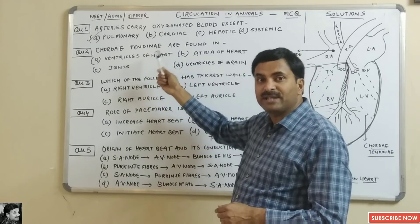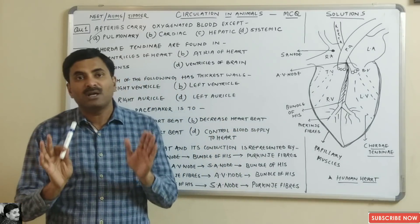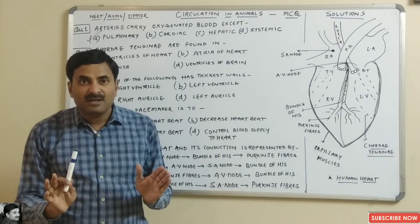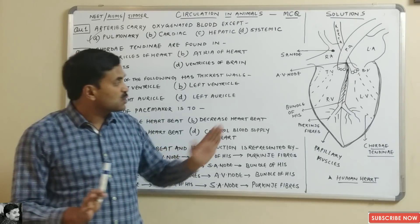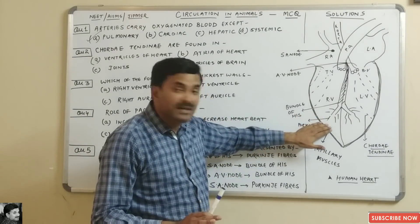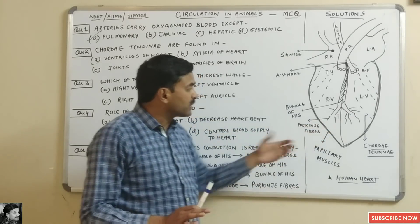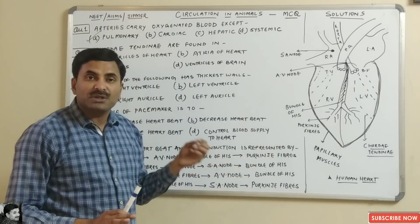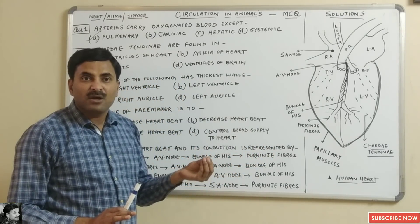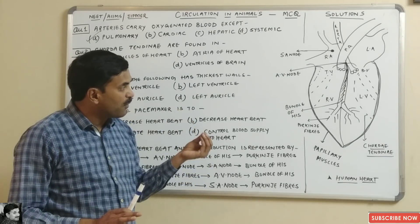Question two: chordae tendineae are found in? You must know that chordae tendineae are found in the heart — specifically, they are present in the ventricles. These are thread-like tendons of the papillary muscles.